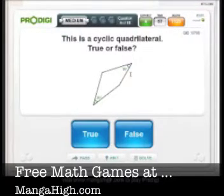Because we answered three questions in a row correctly, Prodigy has upgraded us to medium level and it's given us a new shape here. It said this is a cyclic quadrilateral. Now there's no circle, but I can see that these opposite angles don't add up to 180, so it's clearly false.